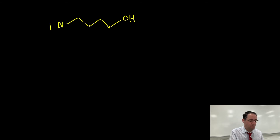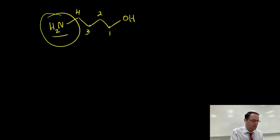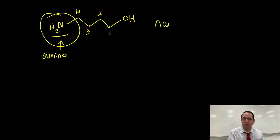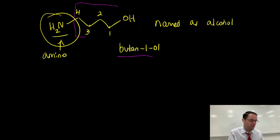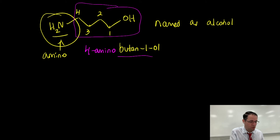The amine has a pretty low priority. So for example, if you have something with a hydroxyl group and an amine in it, we don't call it by the amine — we call the NH2 an amino group. Carbon one is going to be on the alcohol side. So we name this as an alcohol: butan-1-ol would be the parent chain, and we have an amino group at the four position. So we would name this 4-aminobutan-1-ol.